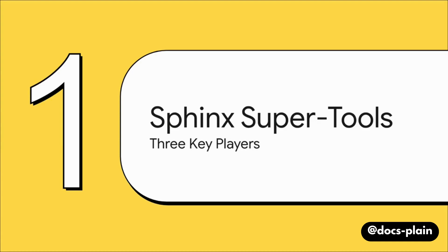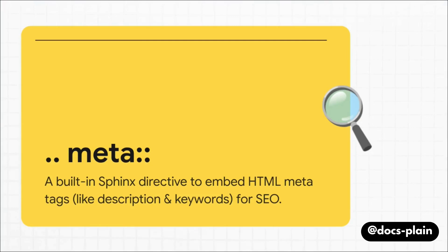Think of them as super tools, each with a very specific job. Together, they can help us transform our documentation from being just human-readable to being totally AI-consumable. The first tool is the meta-directive that is natively built in for Sphinx projects, and you can use it right away.